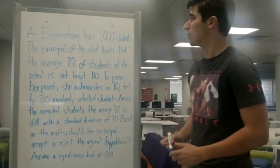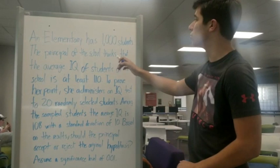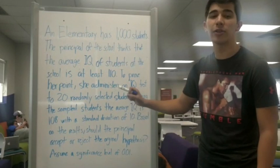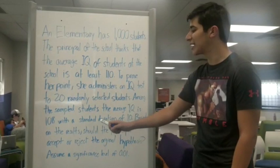The problem we chose for our project is the following. In an elementary school, they have a thousand students. The principal of the school thinks that the average IQ of the students at the school is at least 110. To prove her point, she administers an IQ test to 20 randomly selected students. Among the sample students, the average IQ is 108, with a standard deviation of 10. Based on the results, should the principal accept or reject the original hypothesis, assuming that the significant level is 0.01?